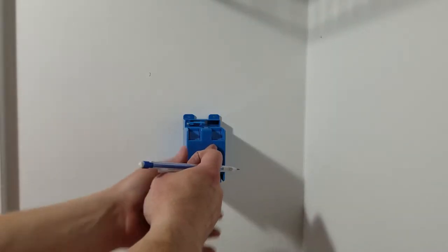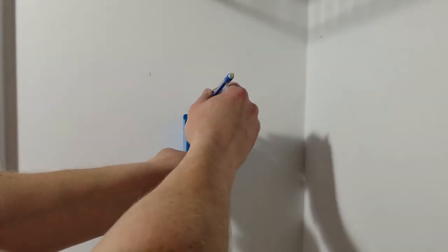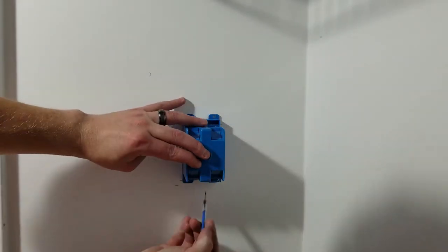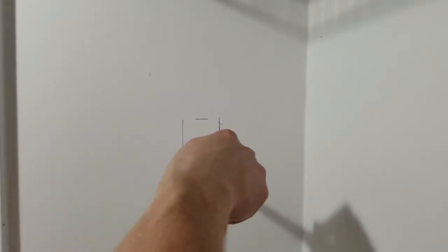I'm just going to use the outlet box and trace around it so I know exactly where to cut. I'm using what's called a jab saw to cut the hole out. The easiest option is just to use a multi tool but I wanted to show the cheapest way to do it.